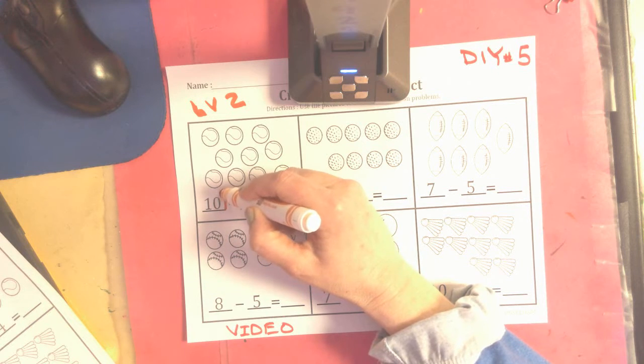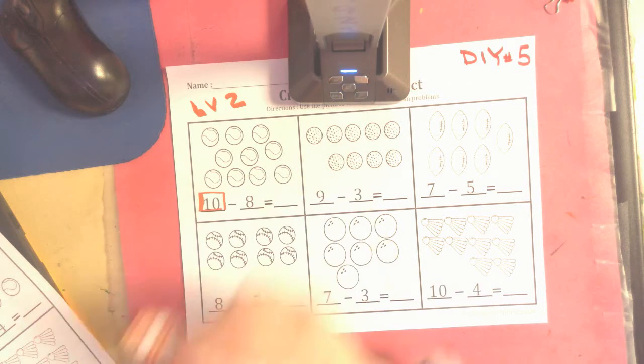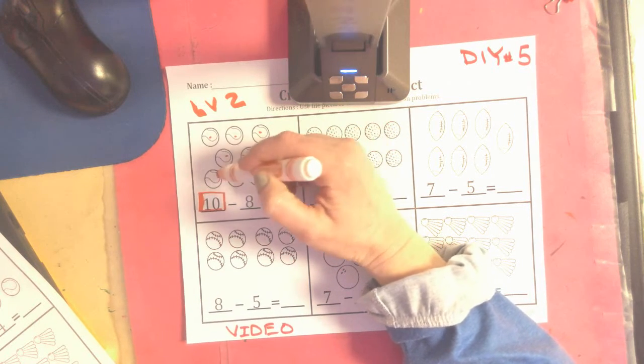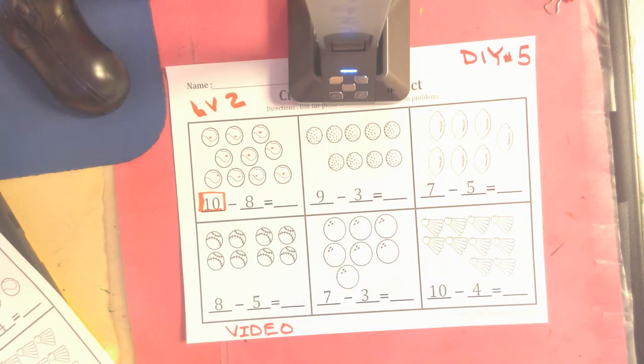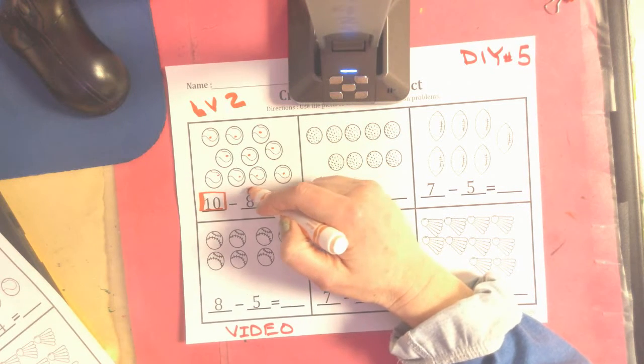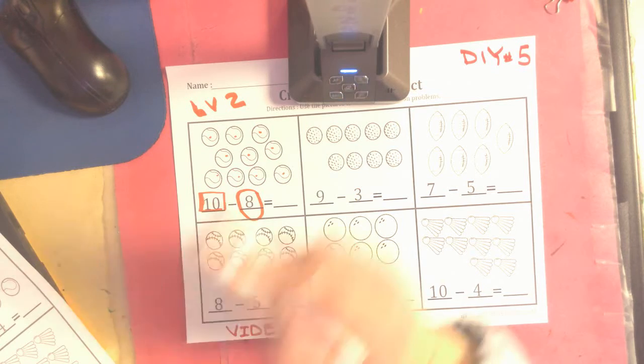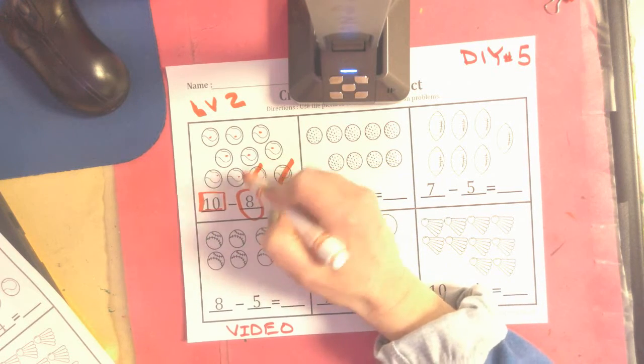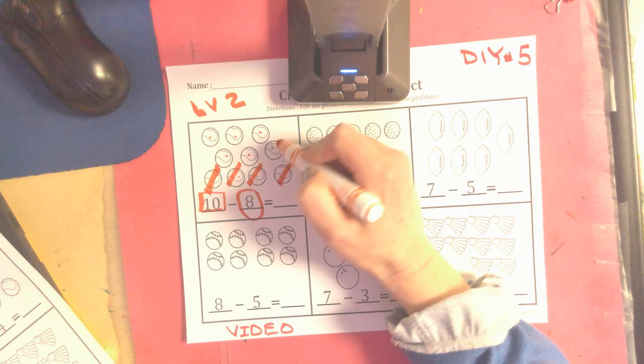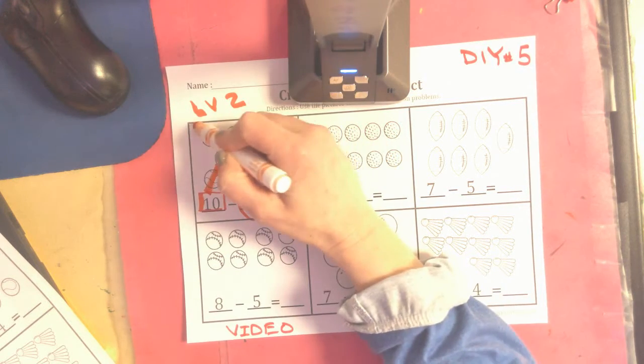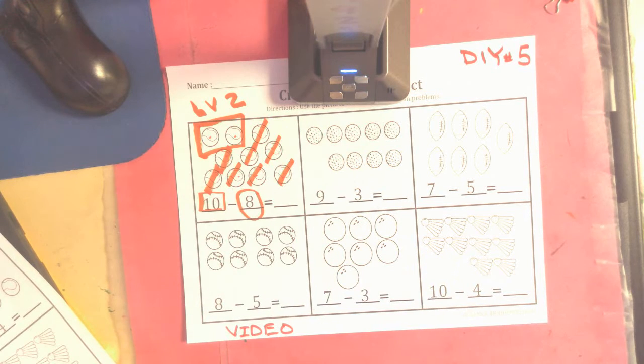You'll notice that the first number I start with is 10 - I'm calling that my start number. Look, they've given you 1, 2, 3, 4, 5, 6, 7, 8, 9, 10. Now it's your job to show taking away 8 by marking out 8: 1, 2, 3, 4, 5, 6, 7, 8. I like to put a little box around what's left over. 10 minus 8 equals 1, 2.